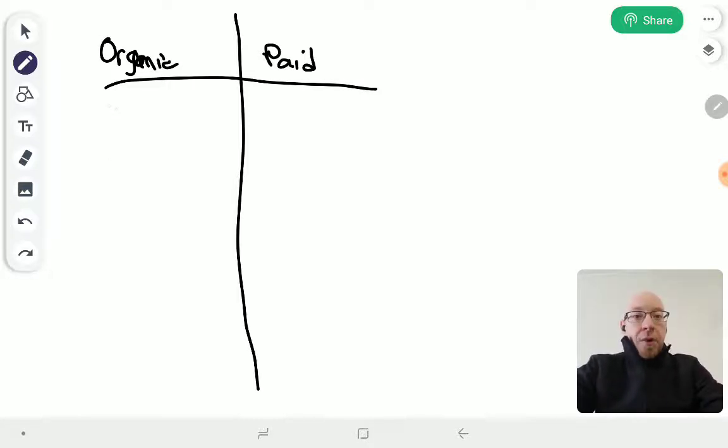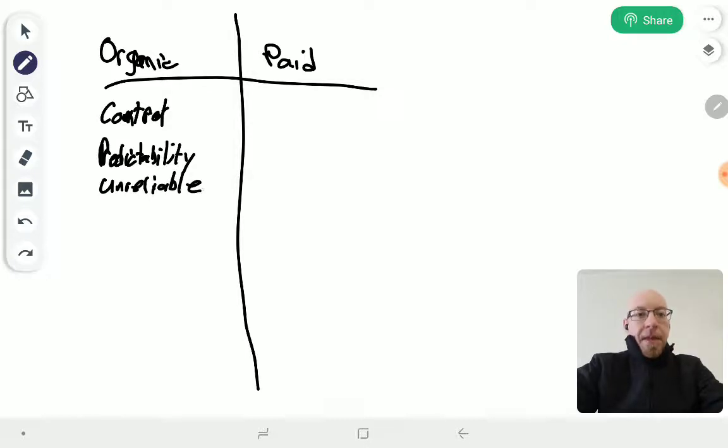So organic, you don't have much control, right? You don't have any predictability. It's not very reliable. It can be, but it takes time to build up. This is a long-term play.